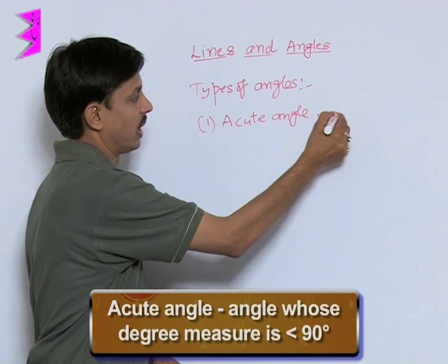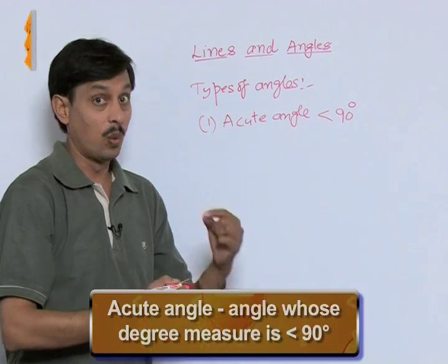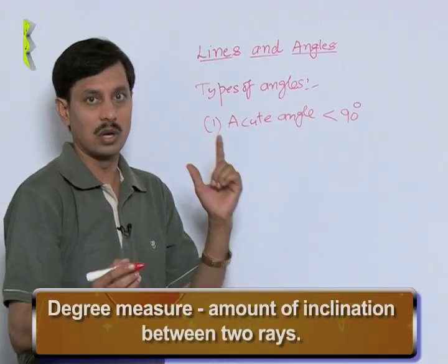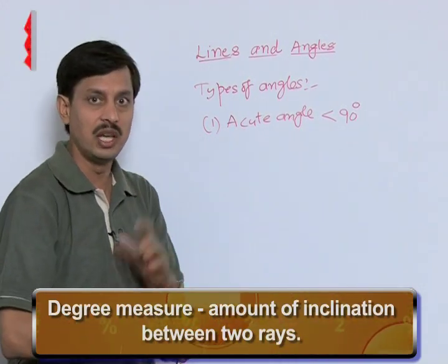Acute angle is that angle whose degree measure is less than 90 degree. And what is degree measure? Amount of rotation or amount of inclination between two rays is known as its degree measure.